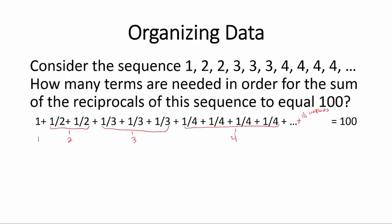We are concerned with the number of terms needed for the sum of the reciprocals to be equal to 100. And then this one is 100. This problem then boils down to simply adding the integers 1 through 100, which we can easily do.